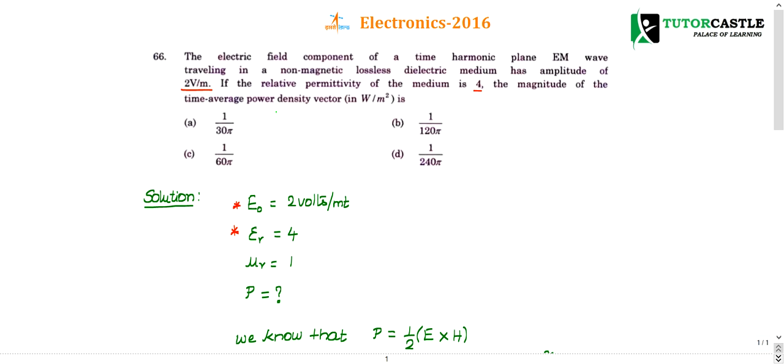And it is also given that non-magnetic. Whenever he says non-magnetic material, non-magnetic medium, then you can conclude that μr is 1. This is very important. Many people don't know, they will confuse between that. Just try to remember non-magnetic means μr is 1.